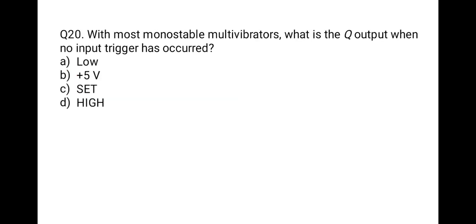The next question: with most monostable multivibrators, what is the Q output when no input trigger has occurred? Options: low, hold, set, or high. In a monostable, there is one stable state and one quasi-stable state. When a trigger is applied, the output goes high. In the absence of an input trigger, the output of the monostable multivibrator is low. Correct option is A, low.